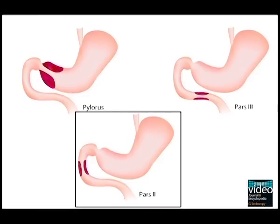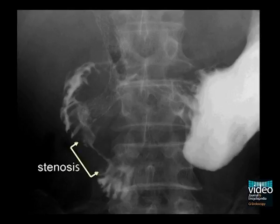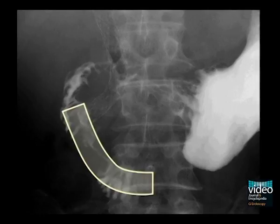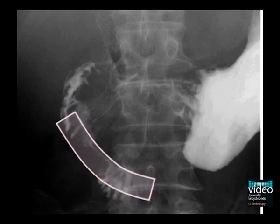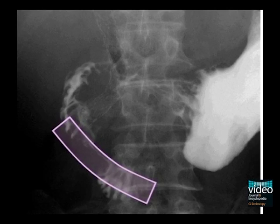How should the stent be placed when the obstruction occurs at the second duodenum? This case is a 70-year-old male with stenosis at the second duodenum distal to the ampulla. If the stent is placed such that the centre of the stent is located at the stenotic position, the stent tends to bridge the flexion, such as the inferior duodenal angle, and it is likely to become unconformable to the anatomy over time. For such cases, the proximal stent end should be located in the gastric antrum.